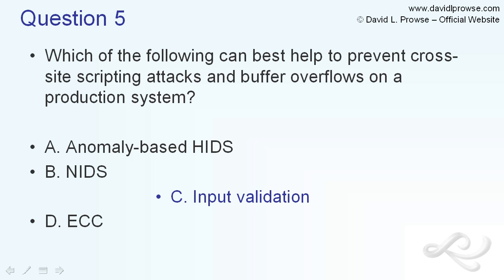Feel free to mark questions when you take the real exam. Input validation is the best answer here. HIDS and NIDS are not going to stop cross-site scripting attacks or buffer overflows — they might detect them, and that's the key. The letter D in those acronyms stands for detection. You need an HIPS or NIPS to prevent them. That's a basic but important distinction between detection and prevention.